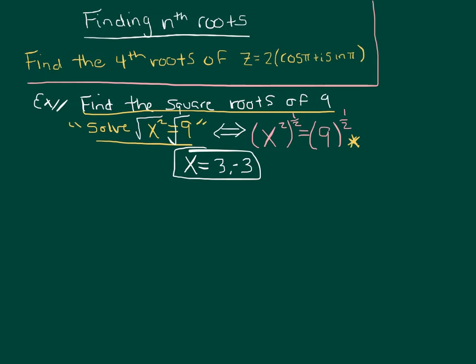One thing you probably never thought to do was to graph these answers in the complex plane. So here's the real number line and here's the imaginary number line. Three is right here and negative three is right here. So I have two answers. Now one thing you probably never thought of was that they are actually evenly spaced apart 180 degrees.